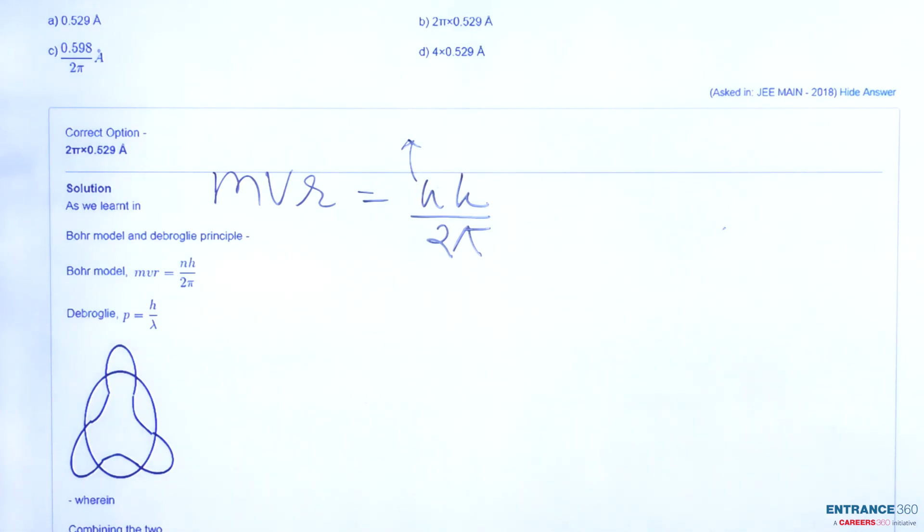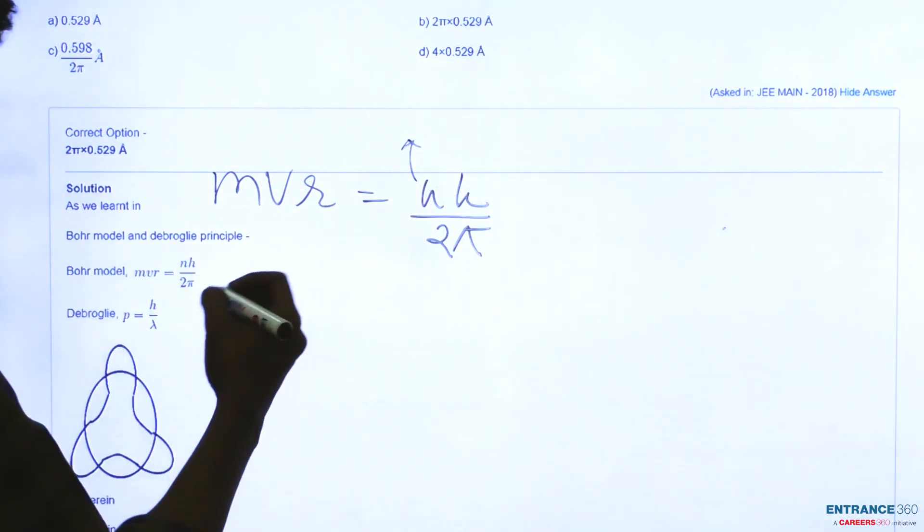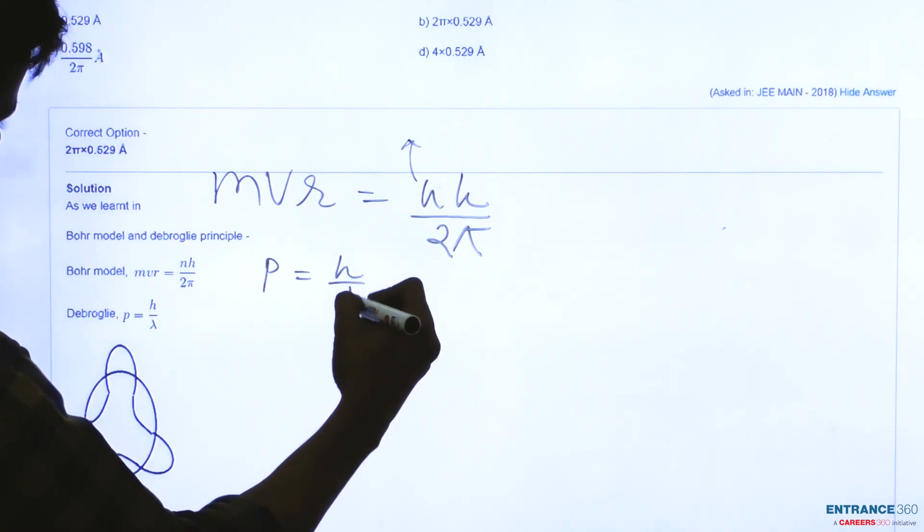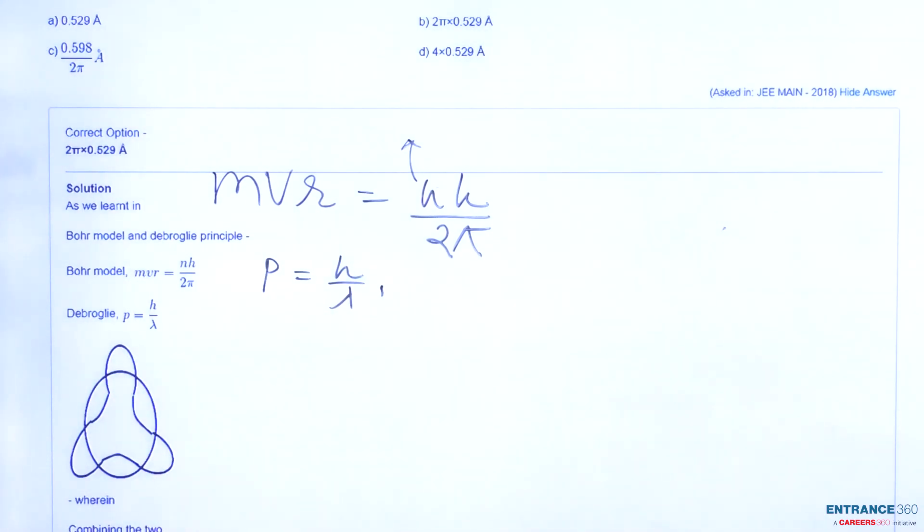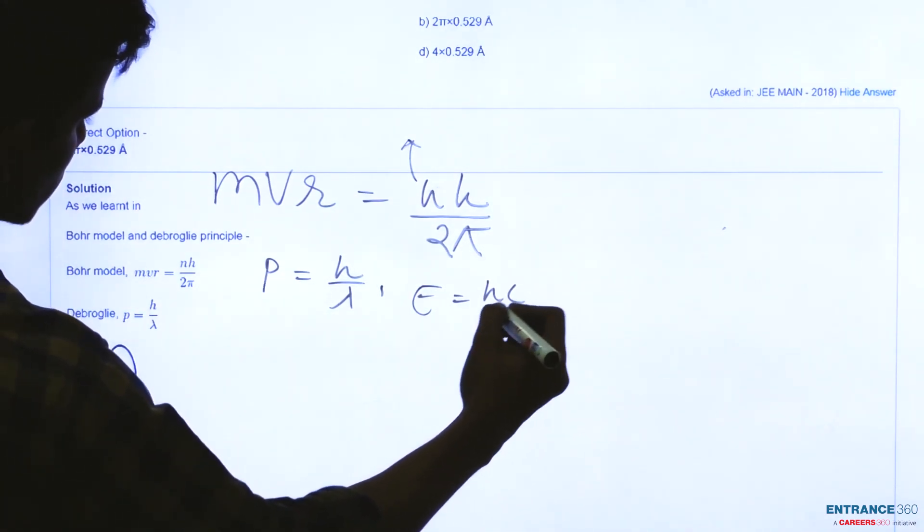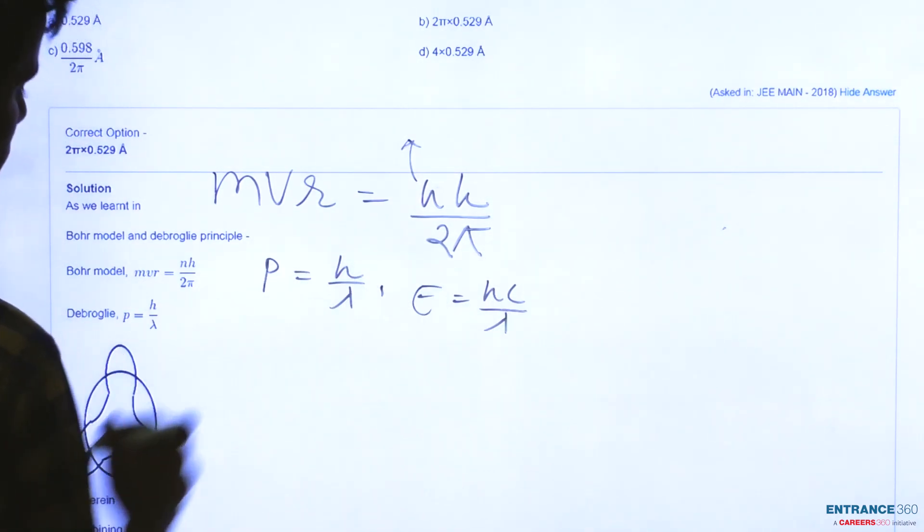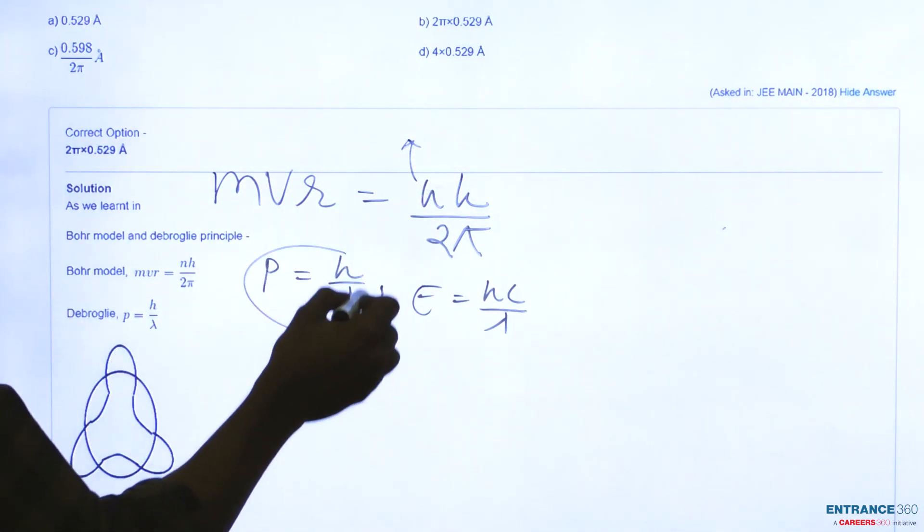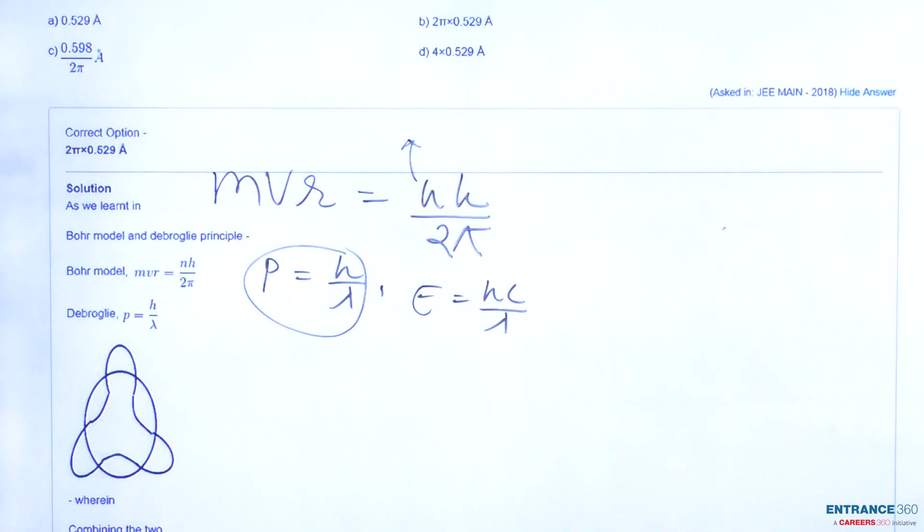Also we know that momentum is given as h upon λ. We have earlier derived it from the equation E is equal to hc upon λ. So from there we derived what will be the value of momentum.